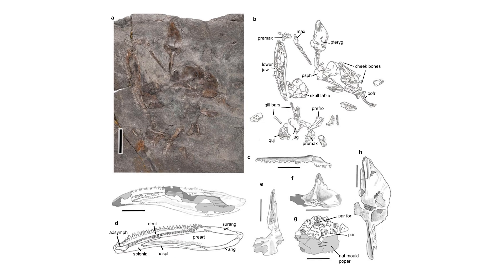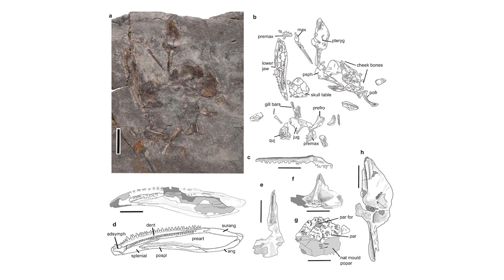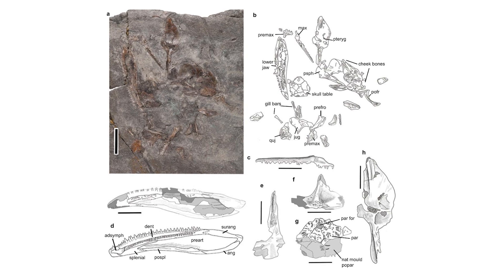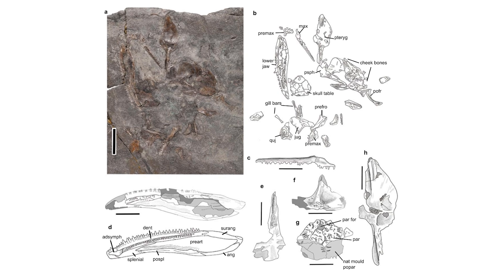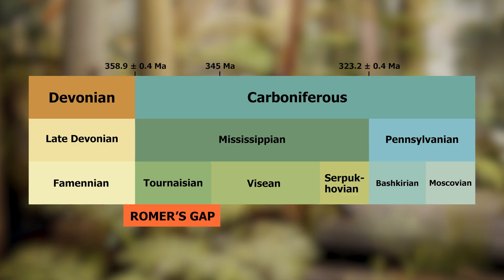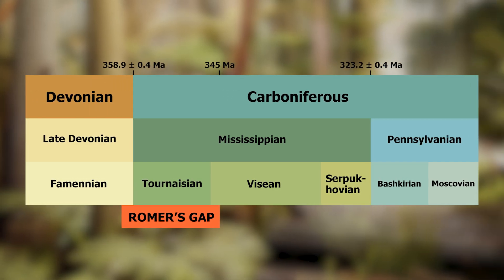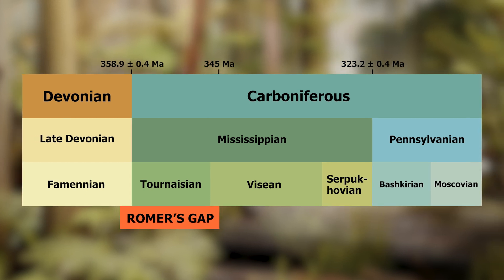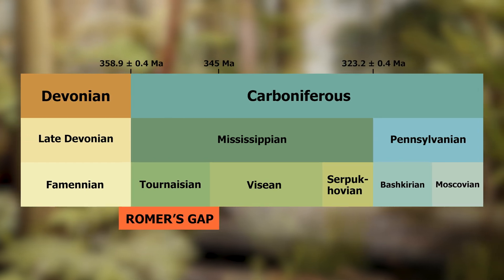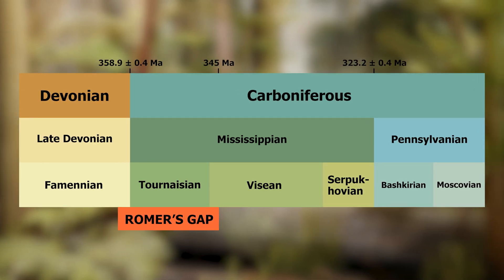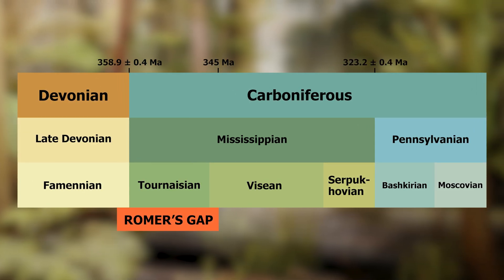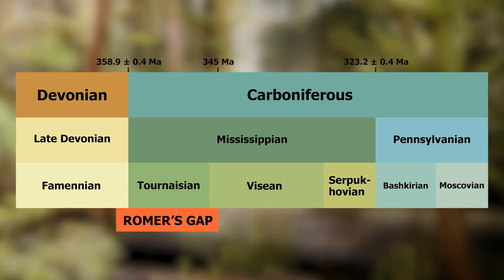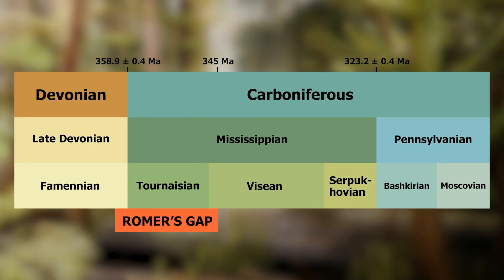Plus, it's pretty incredible that we can predict where we'll find such organisms. It's once again more proof of evolution that we can say, here's when there should be fossils from this certain group of animals, but we don't have any, so let's start looking in the right places — and then you find them.